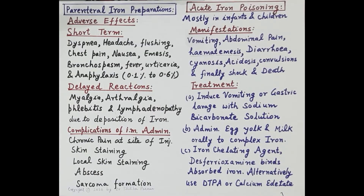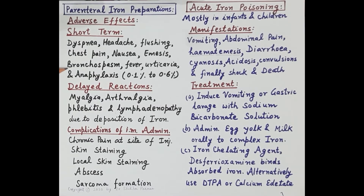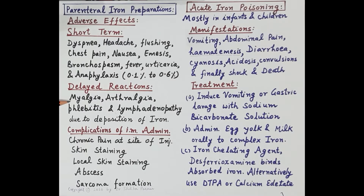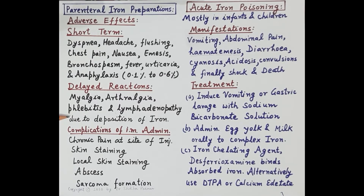The adverse effects of parenteral iron preparations include short-term effects such as dyspnea, headache, flushing, chest pain, nausea, vomiting, bronchospasm, fever, urticaria, and anaphylaxis — the incidence of anaphylaxis is about 0.1% to 0.6%. Delayed reactions include myalgia (muscle pain), arthralgia (joint pain), phlebitis (inflammation of a vein), and lymphadenopathy — enlargement of lymph nodes due to iron deposition.